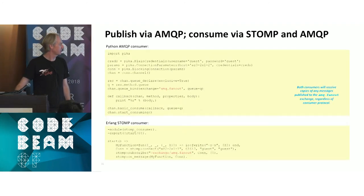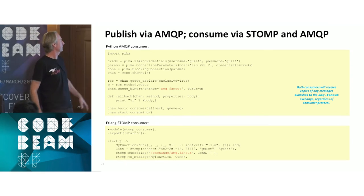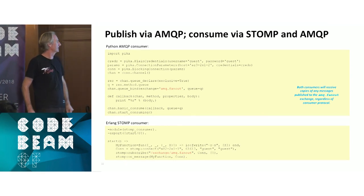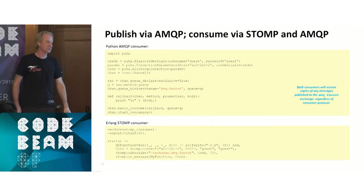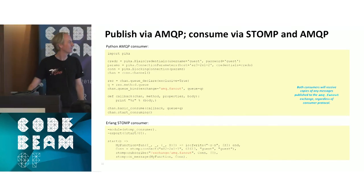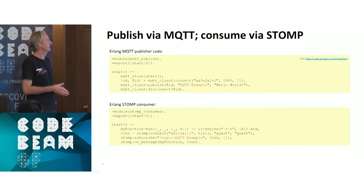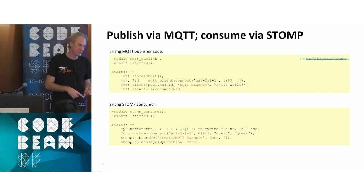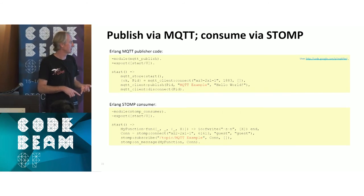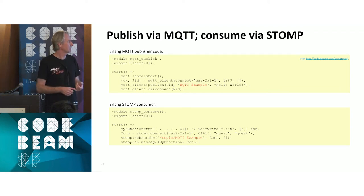There's also Python — a simple Python STOMP consumer — alongside the Erlang code. And another example publishing via MQTT and consuming via STOMP. The MQTT plugin ships with Rabbit, you just need to enable it. There are quite a few plugins that ship with the product: MQTT, a couple of different exchange types, authentication mechanisms, and more.